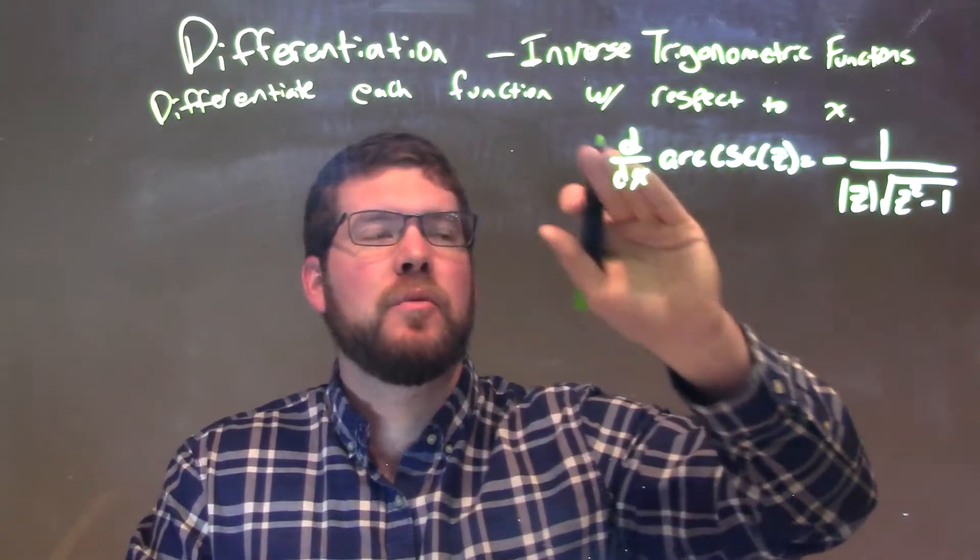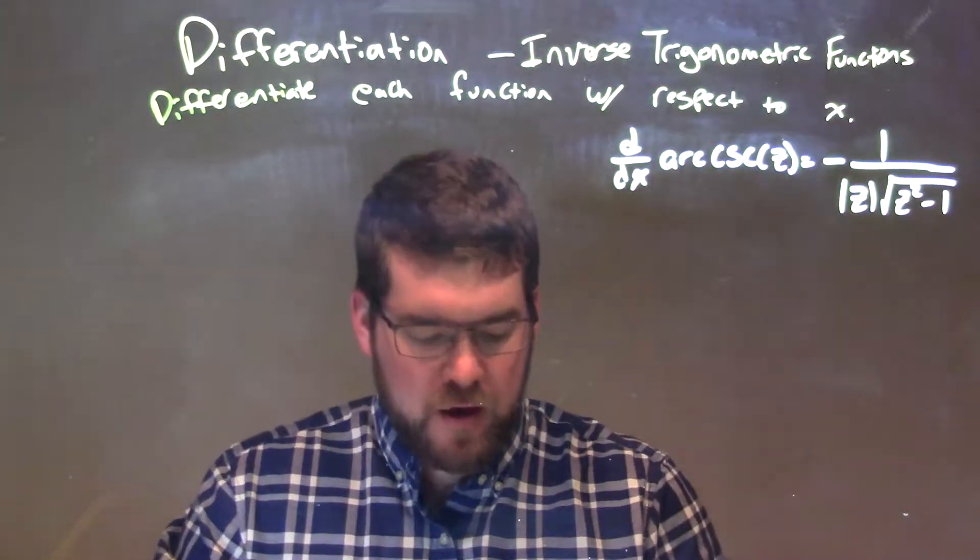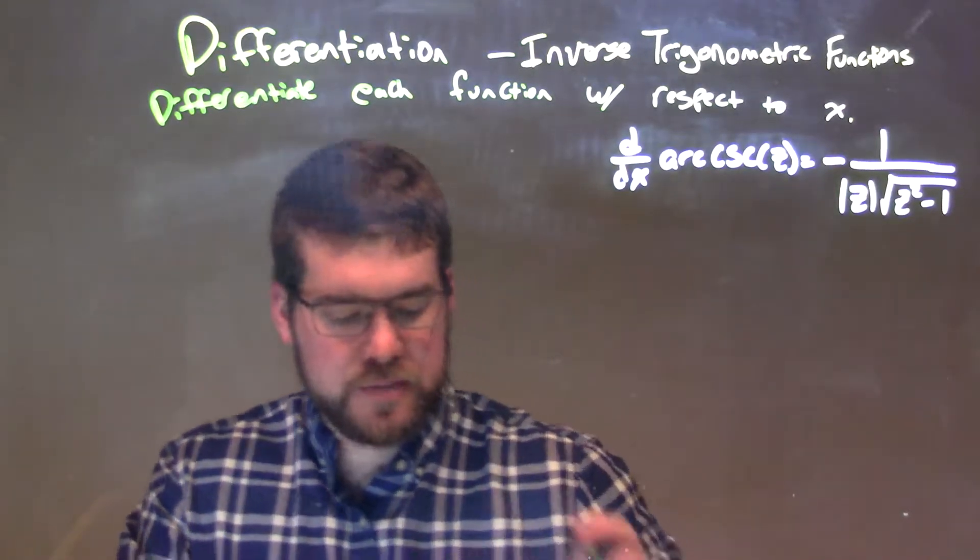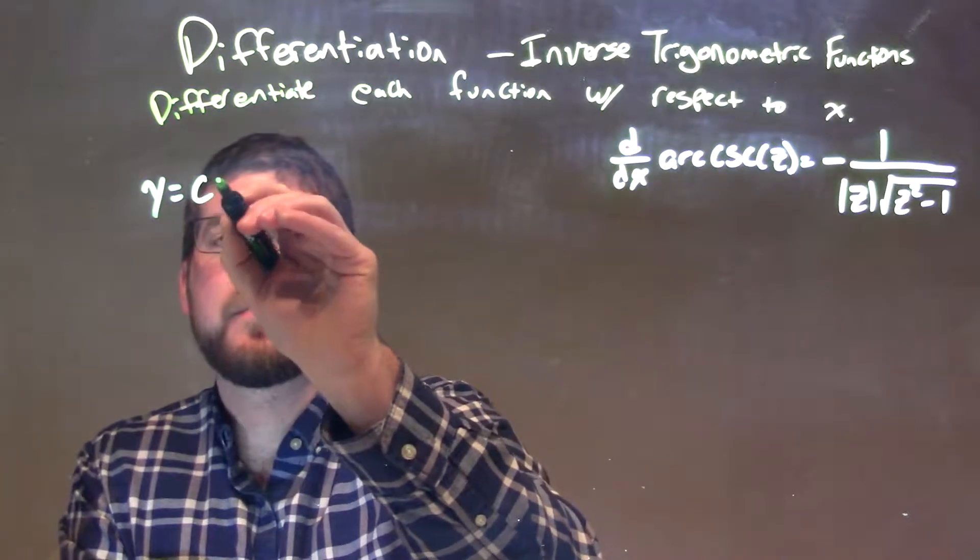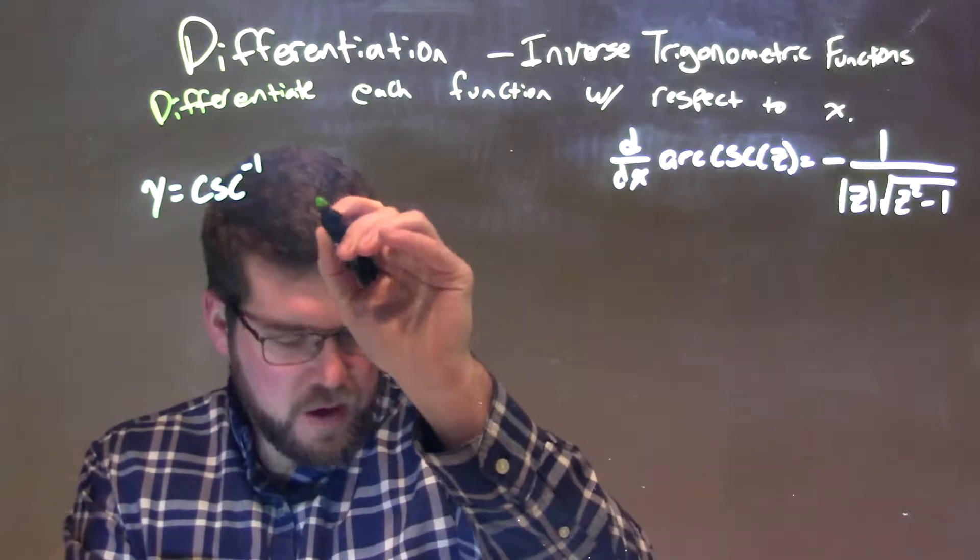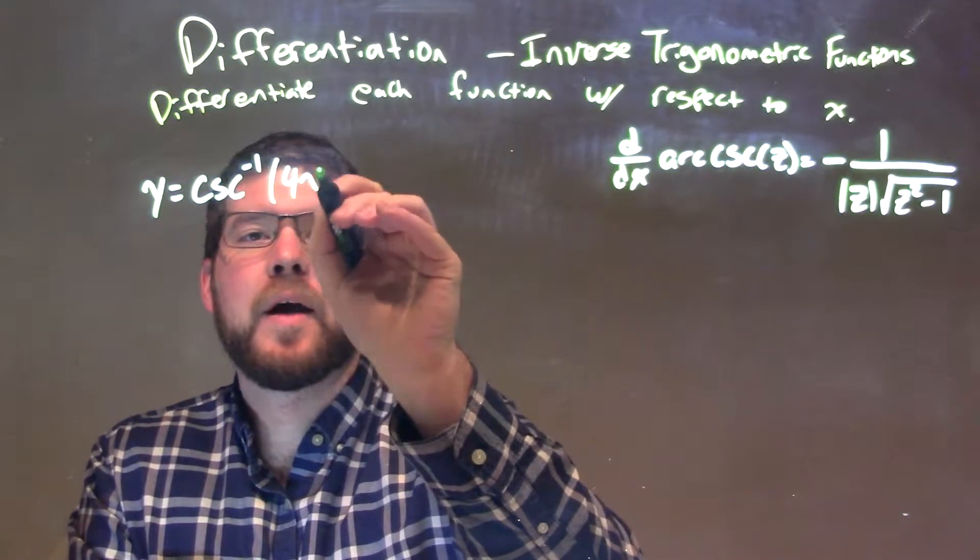I'm going to differentiate each function with respect to x. So, if I was given this function, y equals the arc cosecant of 4x squared.